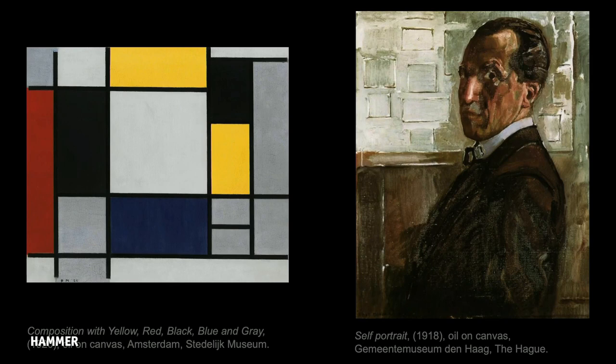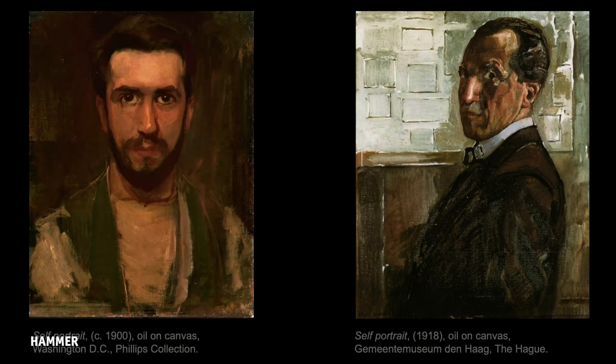Mondrian was extremely slow to mature. He was already 36 when he painted himself with, behind him, one of his first geometrical abstract exercises hanging on the wall. Next to it is the breakthrough of just two years later, with his unmistakable colors and structure. He's already halfway through his life, already with a career behind him. I'm going to take a few minutes now to turn the clock back 20 years and recapitulate Mondrian's beginnings as an artist.